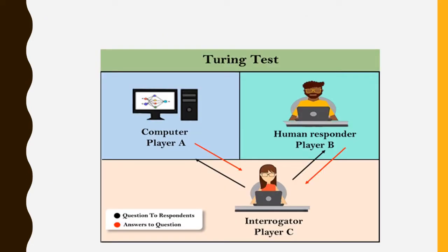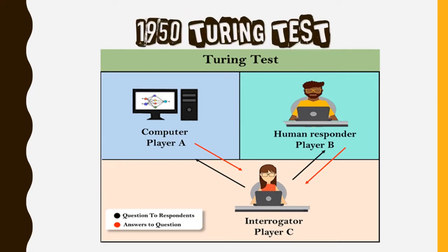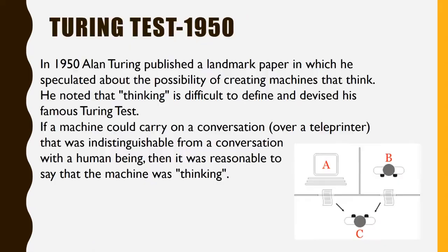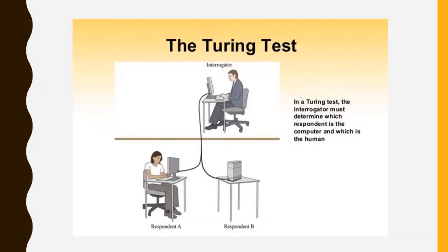In 1950, Turing proposed an interesting test for computers to check whether they can communicate just like humans, either through text or speech. In this test, one evaluator has to communicate with a human and a computer simultaneously without knowing which one is the computer. If at the end of the test the evaluator is unable to determine which one is the computer, the computer is said to pass the Turing test.